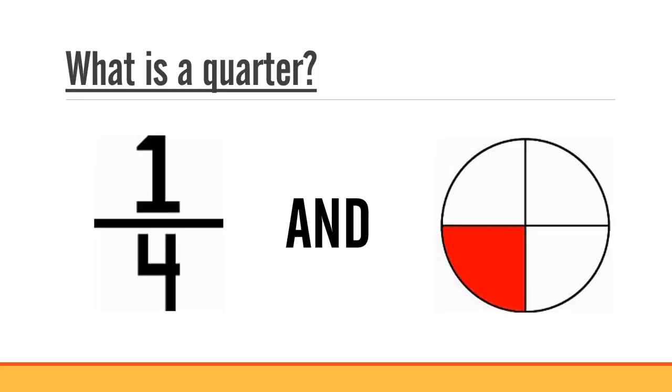What is a quarter? A quarter is one of four equal parts. Here in the picture you can see a circle. The circle is split into four equal parts, but only one part is shaded, which means a quarter of the circle is shaded in red.